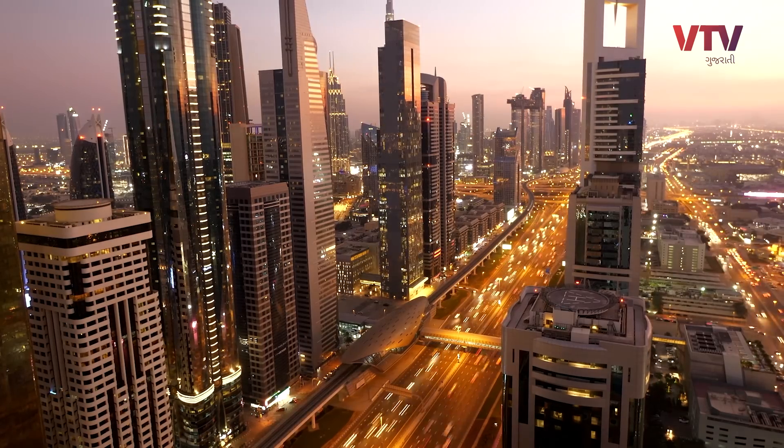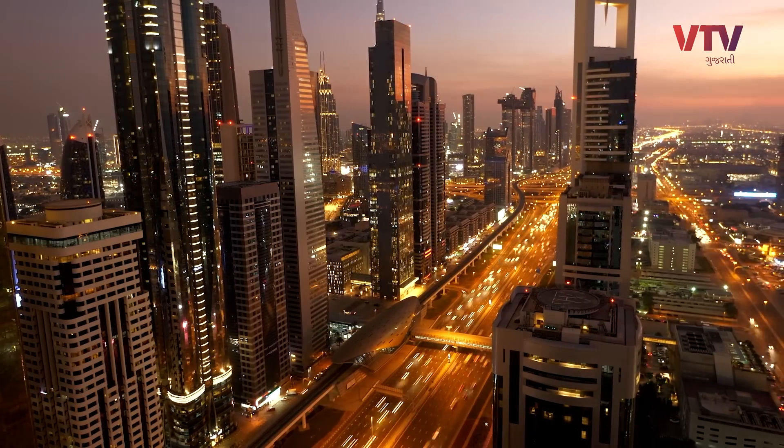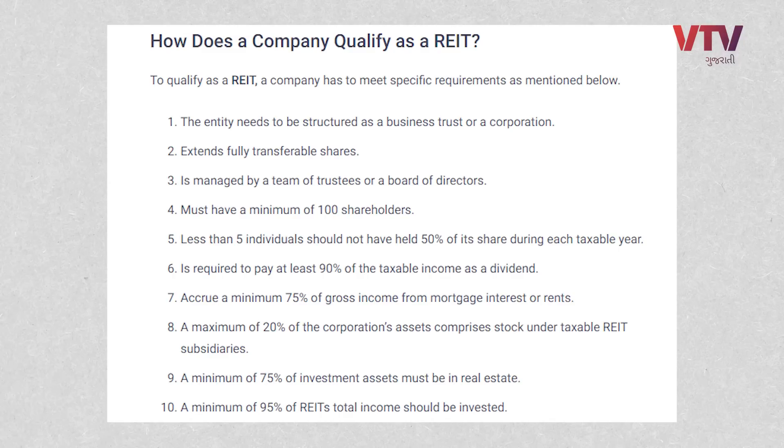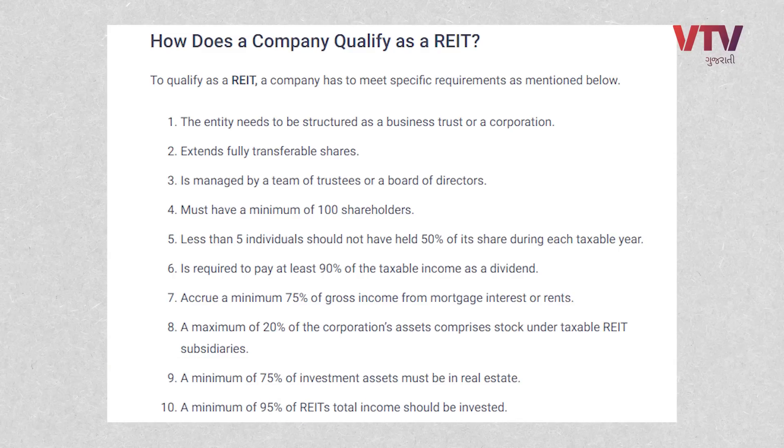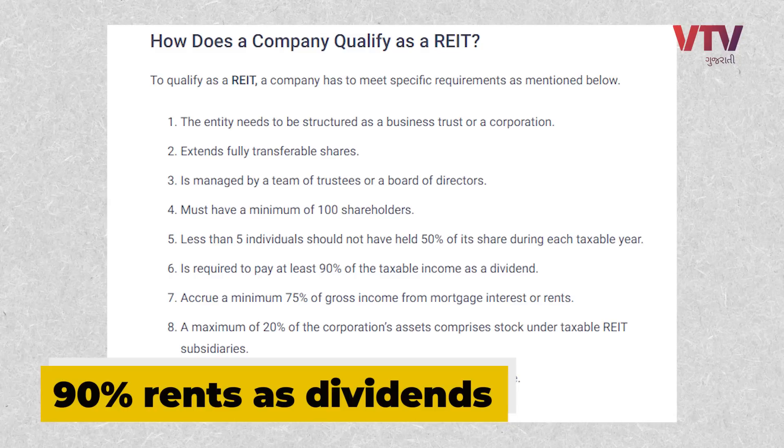In REIT, they have to distribute more money to investors. Listed companies that are normally real estate companies won't always distribute profit to shareholders, because they reinvest profits. But in REIT, there is a rule that you must distribute income — 90% must be paid out. The same-to-same rule does not apply to a regular real estate company.